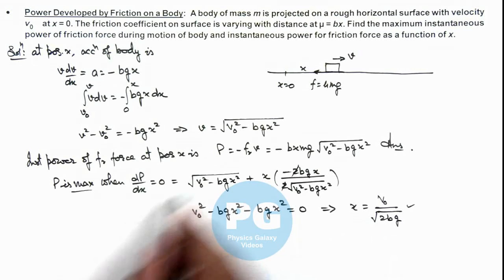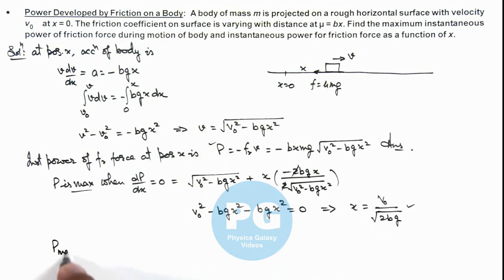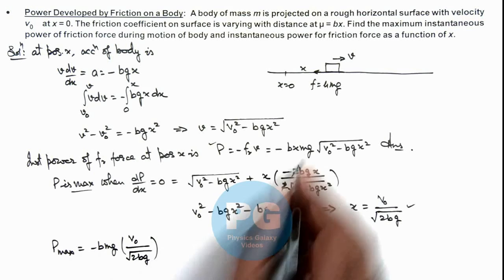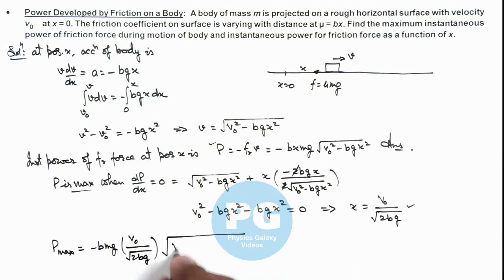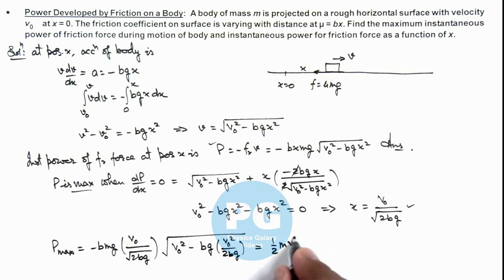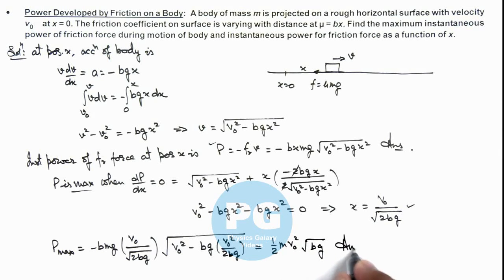Substituting this value of x into the power function, the maximum power is minus bmg multiplied by (v₀ divided by the square root of 2bg), multiplied by the square root of (v₀² minus bg·(v₀²/2bg)). On simplifying, the maximum power is equal to minus one-half times m times v₀² times the square root of bg. That is the final result of this problem.